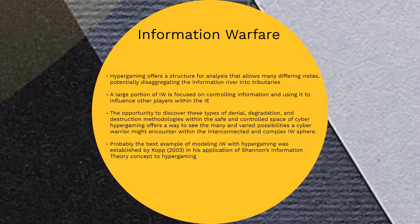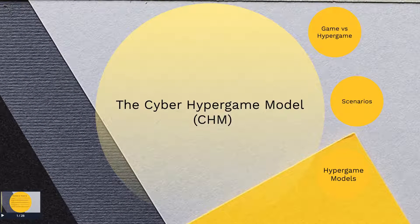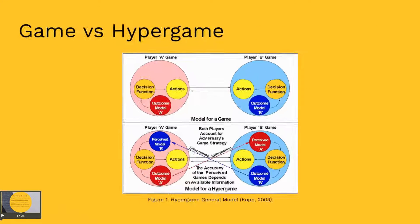Probably the best example of modeling information warfare with hypergaming was established by Kopp in his application of Shannon's information theory concept to hypergaming. Before a model for cyber hypergames can be laid out, a general understanding of hypergaming as a construct must be presented. This diagram depicts a simple model showing the difference between a game and a hypergame. As Kopp explains, in a hypergame, the players perceive their opponents' games. How accurate that perception might be depends on the information available to respective players. Inaccurate information leads to a misperception of the game state and may lead to actions which do not gain the player an advantage.